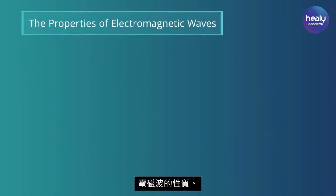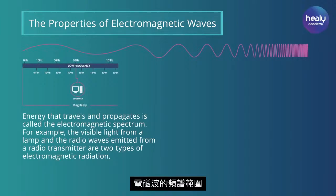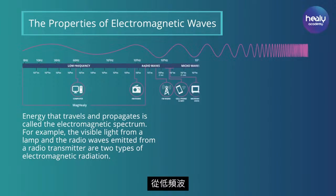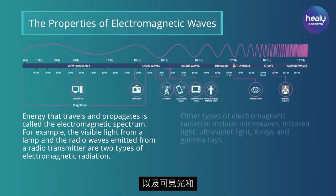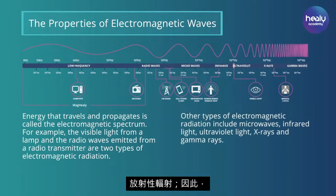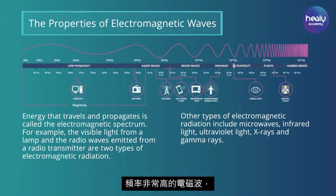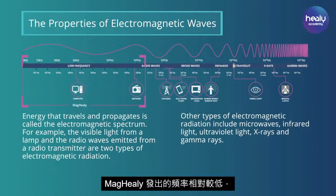The spectrum of electromagnetic waves we most frequently encounter ranges from low-frequency waves, such as those generated by electronic devices, to radio and microwaves, as well as visible light and radioactive radiation, and therefore includes every form of energy propagating in space. Electromagnetic waves with a very high frequency, such as X-rays, can be dangerous. Maghealy emits relatively low frequencies in the range of about 10 to the power of 6.